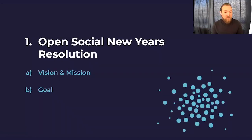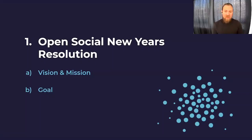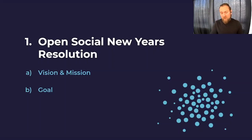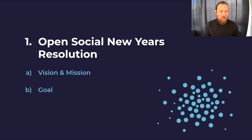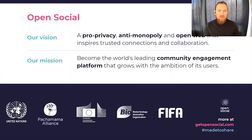So we're going to start basically with our new year's resolutions. We were really thinking about where do we want to go with OpenSocial, what do we want to achieve in 2021. This is a process we already started throughout the whole last year, working with a lot of people together with experts in different fields, and internally doing a lot of research. Our vision of OpenSocial is a pro-privacy, anti-monopoly and open web that inspires trusted connections and collaboration.